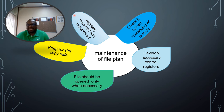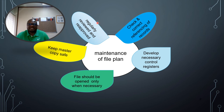Your file plan must also be regularly reviewed when the right time comes or when it becomes necessary, such as when your organizational structure has been reviewed or new functions have been added. You may also review it after a certain period — say three or five years — to add references that were discovered missing during the usage of the file plan.